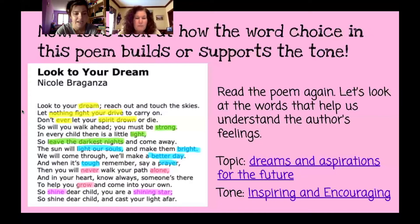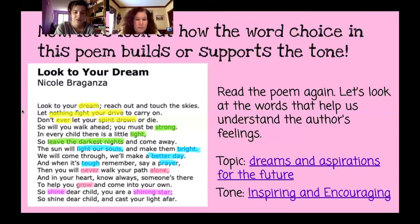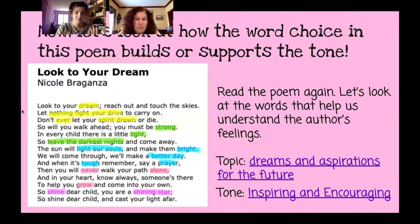The next three lines: "The sun will light our souls and make them bright. We will come through, we'll make a better day. And when it's tough, remember, say a prayer." The first thing we highlighted there is "light our souls," and we also highlighted "bright." The author is talking about the sun as a symbol of positivity, saying leave negative thoughts behind and stick with positive ones. When I think of soul, I think of the connection between your mind and your heart. So if you keep positive thoughts, your soul will be uplifted and kept bright, and every day is a new clean slate — just keep moving forward toward your goals.